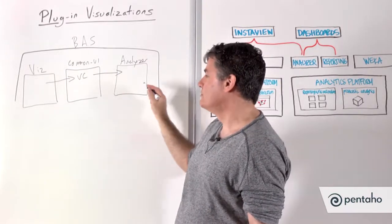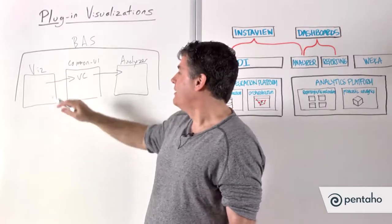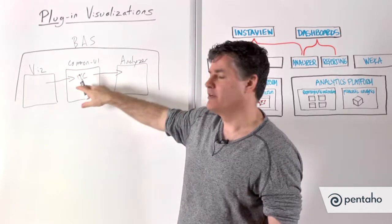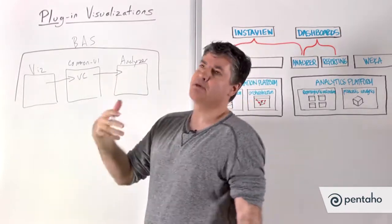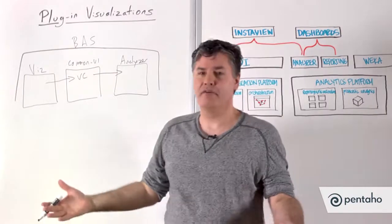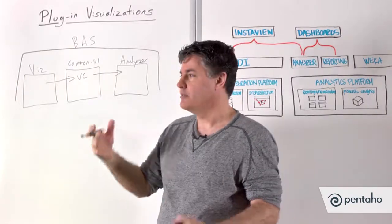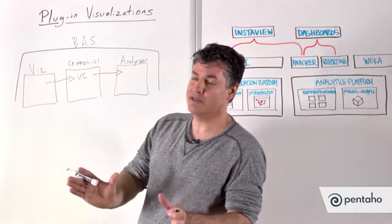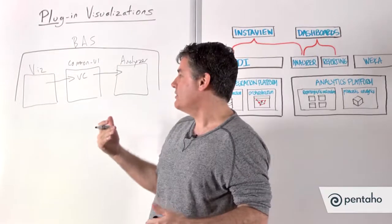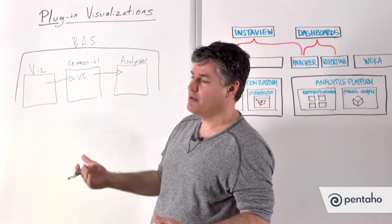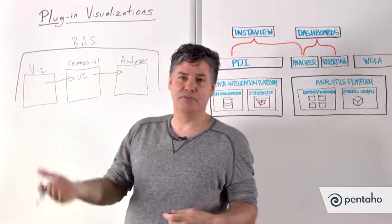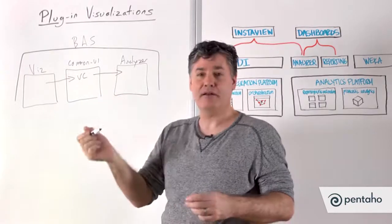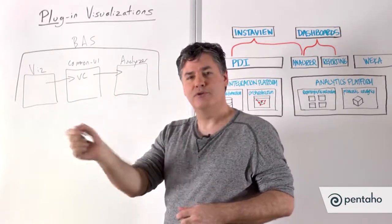The user selects our new visualization. The next thing that happens is that metadata about the visualization is given to Analyzer by the visualization controller. The visualization specifies that it needs certain kinds of data attributes — a couple of different dimensions and two or more measures. For instance, a pie chart just needs slices and measures, whereas something like a histogram or trellis chart needs multiple numeric values. This metadata is provided to Analyzer so that it can populate a panel for you to drop your data elements onto.